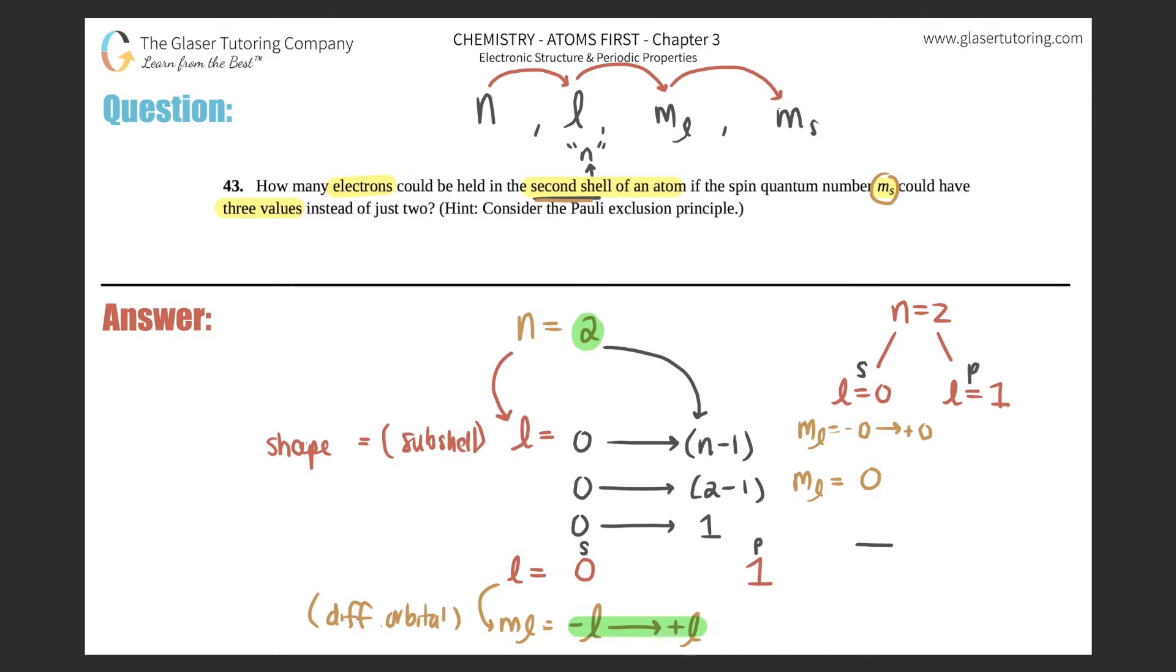Let's do it again for the p, which is l equals one. ml would be negative one all the way to positive one. So what are all the numbers in between there? ml would be negative one, zero, and plus one. There's three different orbitals for a p subshell. That's why you have px, py, and pz—three different orbitals, and they're all degenerate. They all have the same amount of energy.